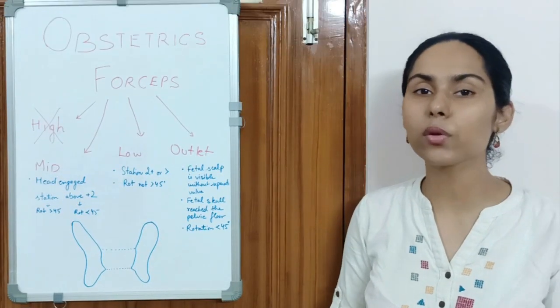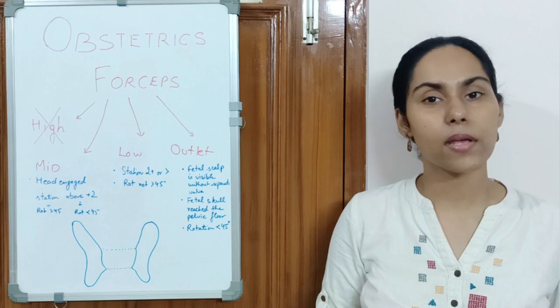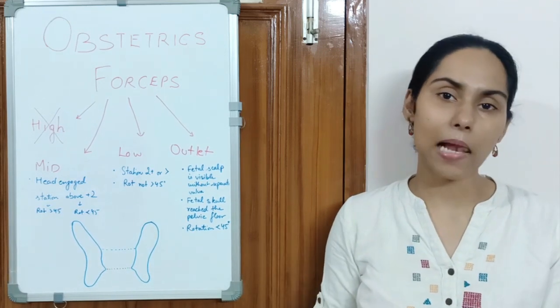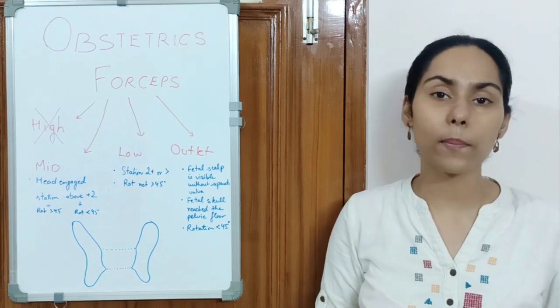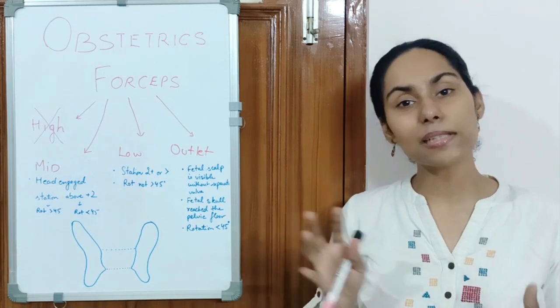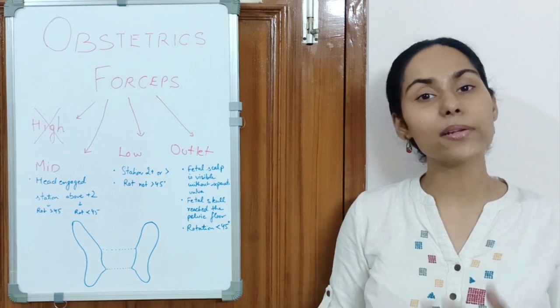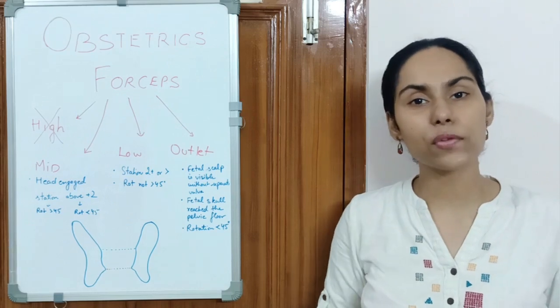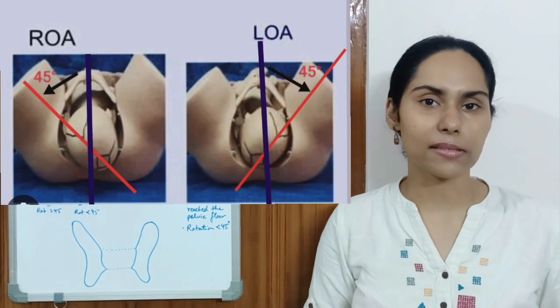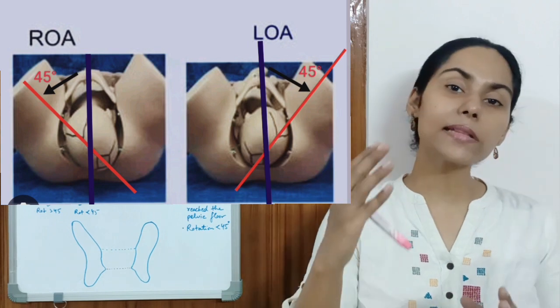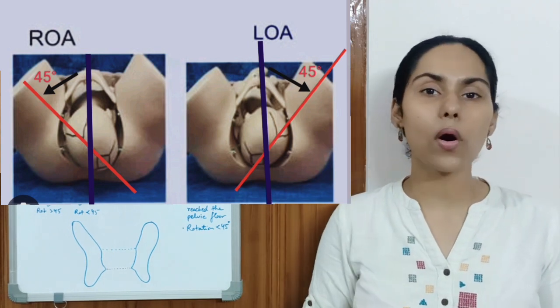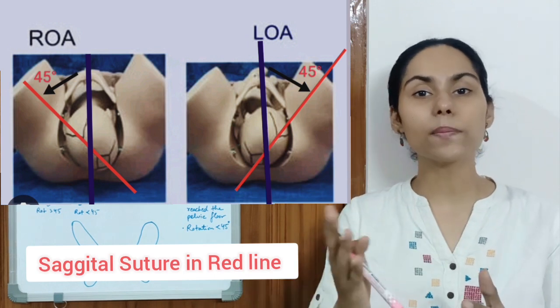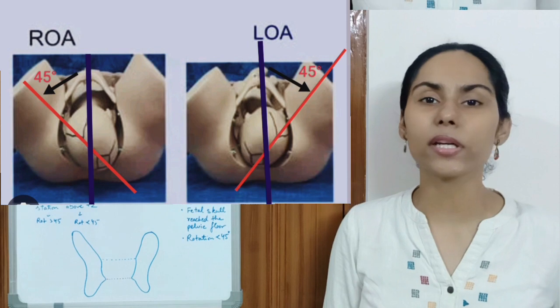Now coming on to the most commonly used outlet forceps. Outlet forceps are the ones where we can see the fetal skull without separating the labia—that is the time when we apply. So the fetal skull has reached the pelvic floor and you can see the fetal skull without separating the labia, and the rotation of the fetal skull should be less than 45 degrees. That means basically that the sagittal suture on the fetal skull and the AP diameter of the pelvic outlet should not be more than 45 degrees at an angle to each other.